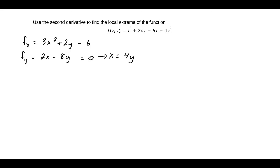Now we can take this value, x equals 4y, this equation, and substitute this back into fx, setting it equal to 0. That will be 3 open parenthesis 4y close parenthesis squared plus 2y minus 6 equals 0.